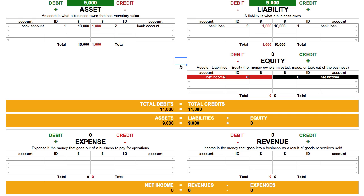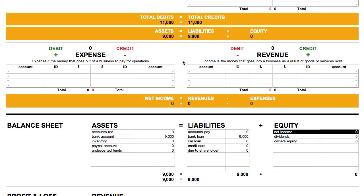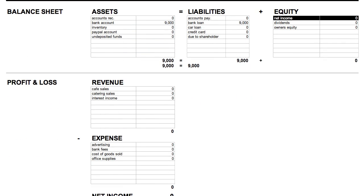If we want to be sure we entered the correct entry, using the accounting equation cheat sheet, it's simple to verify. Before we recorded the entry, we had $10,000 in our bank account and $10,000 owing for a bank loan. After the entry, we now have $9,000 in our bank account and $9,000 outstanding for that bank loan. This is what should happen when a loan is paid back — you owe less for the loan and you have less in your bank account.